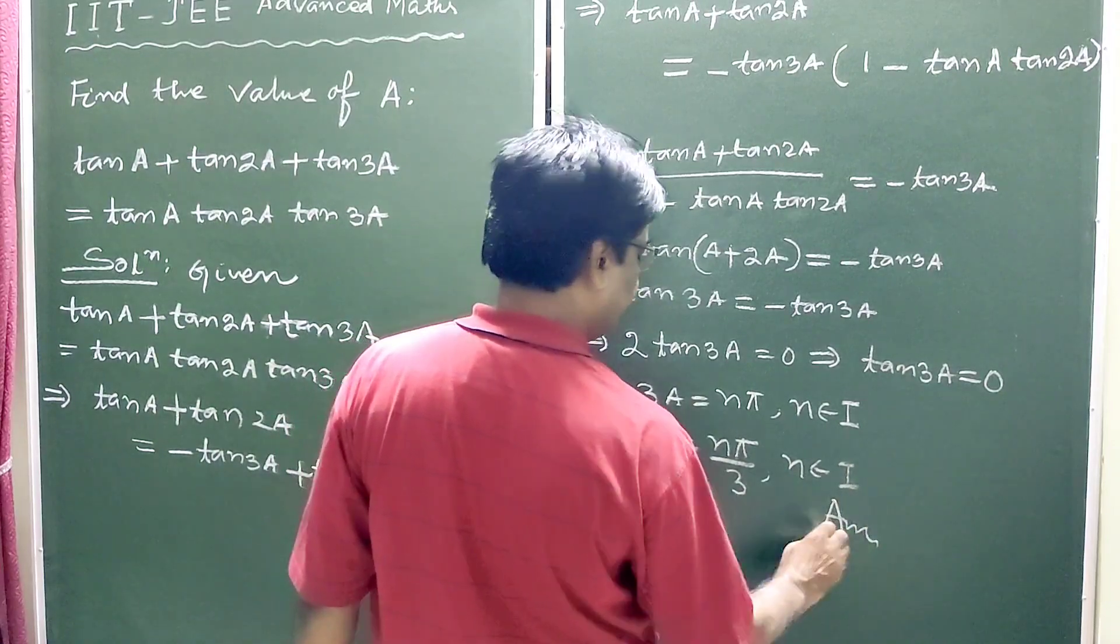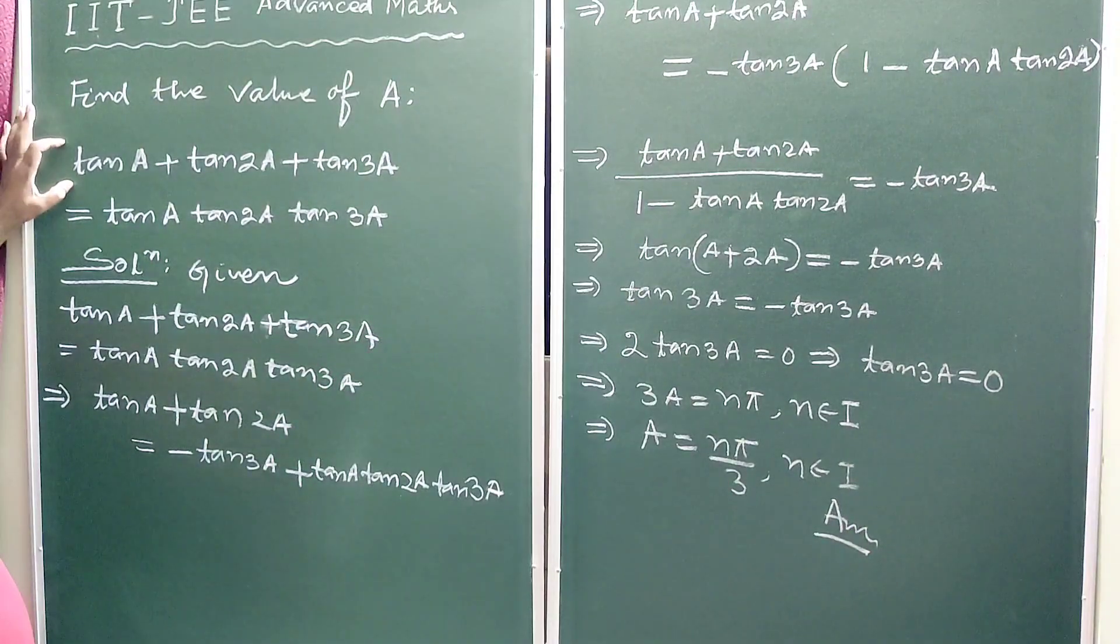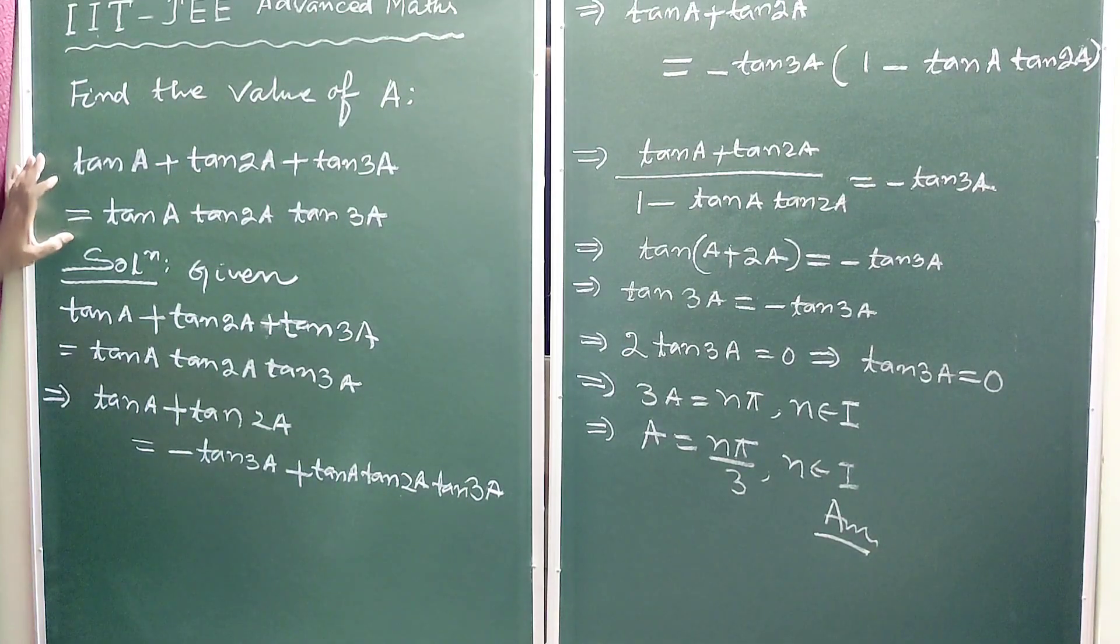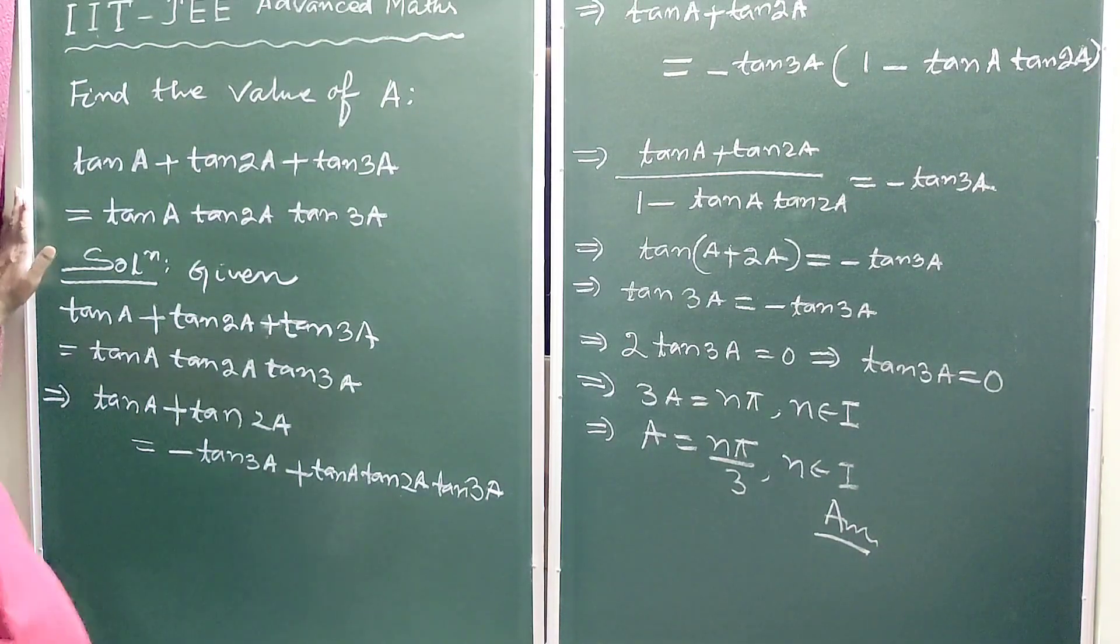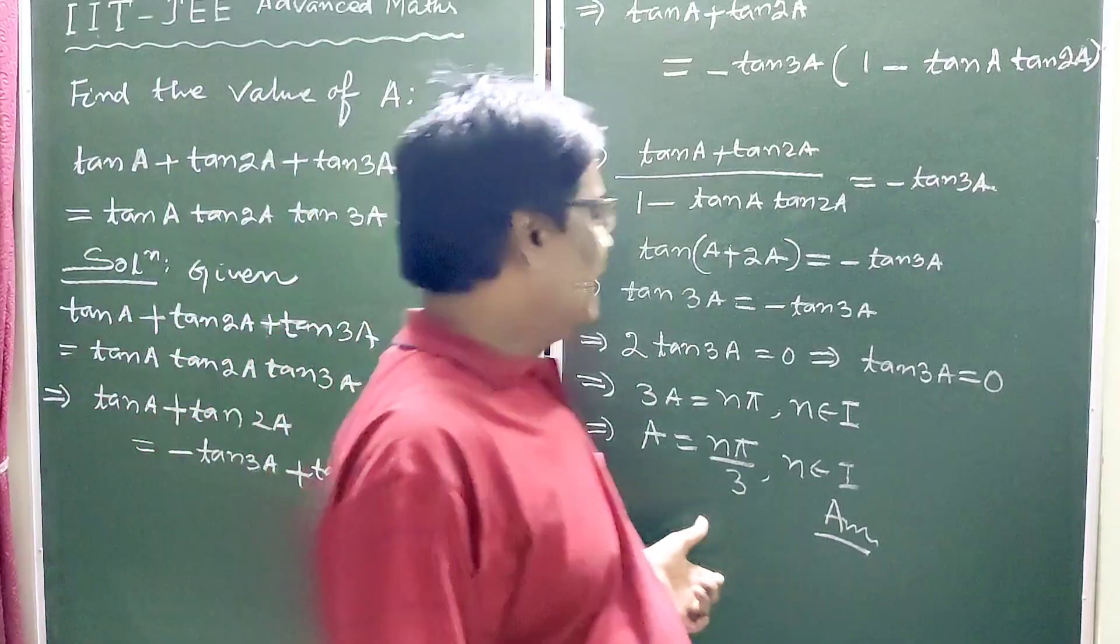Answer. So solving the given trigonometric equation, we get the value of A is n pi by 3.